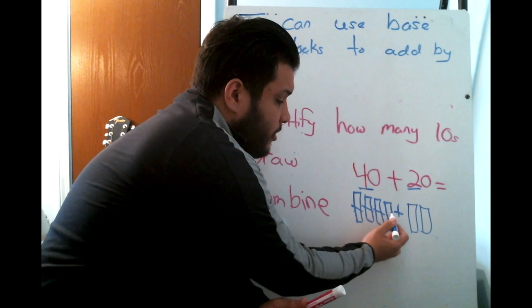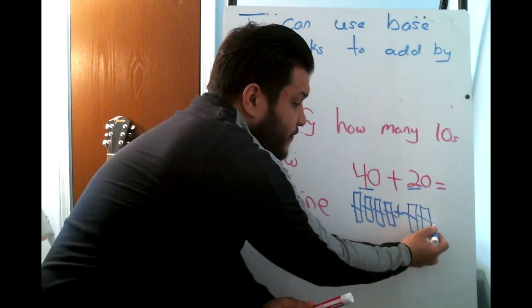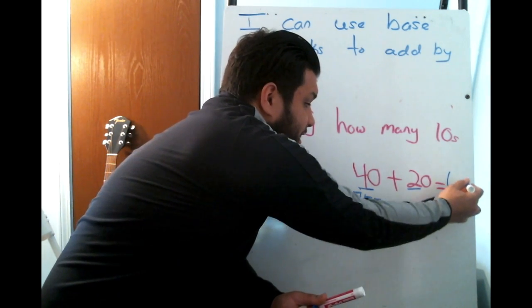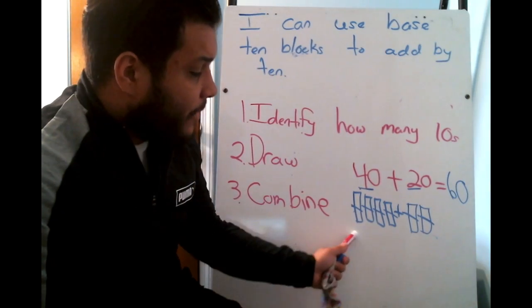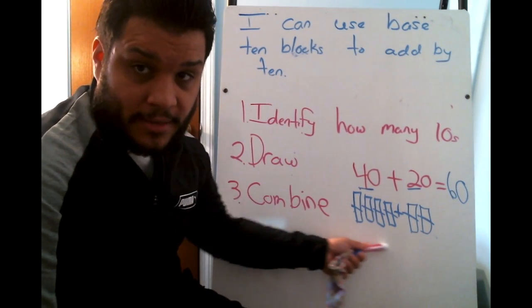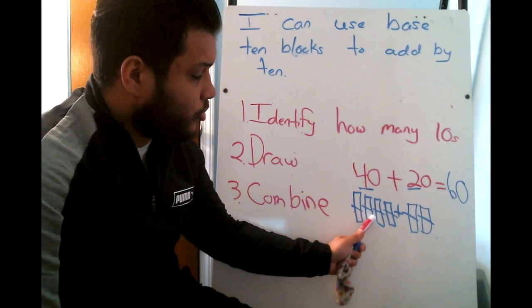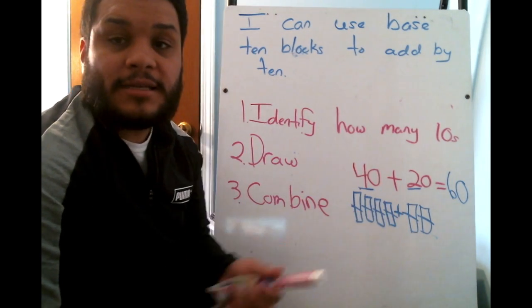Let's count them together. 10, 20, 30, 40, 50, 60 is my answer. How many 10s should I have here? I'm checking my work. 6 10s. 1, 2, 3, 4, 5, 6.